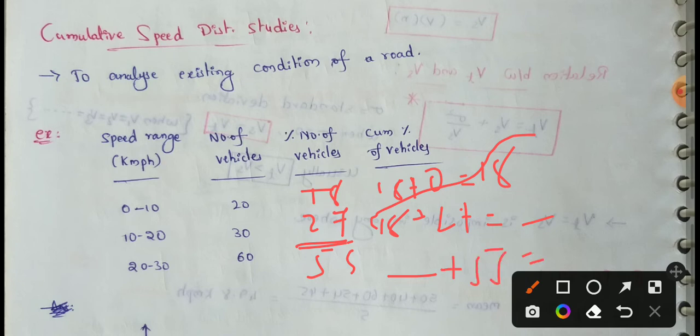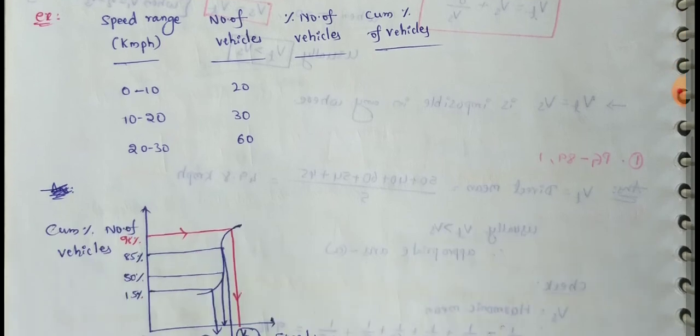The value V15 represents the minimum speed and safe design speed. One example problem will be discussed in detail in the next video.